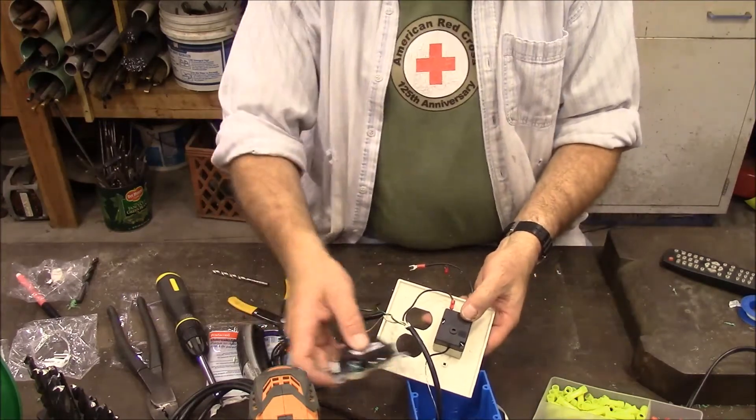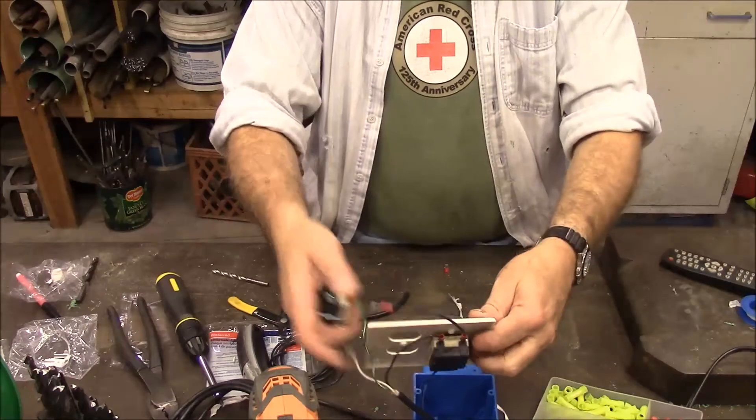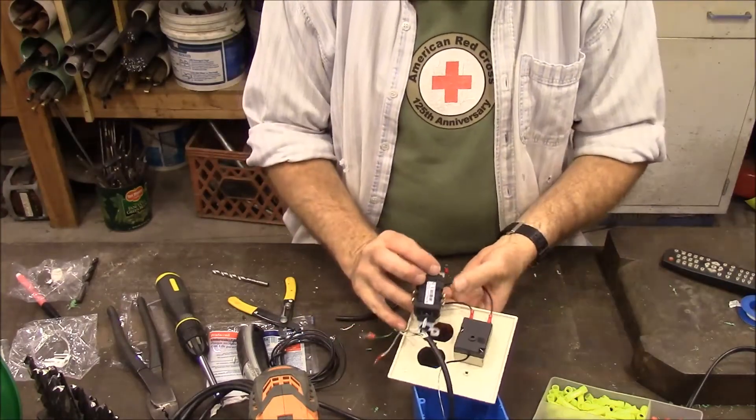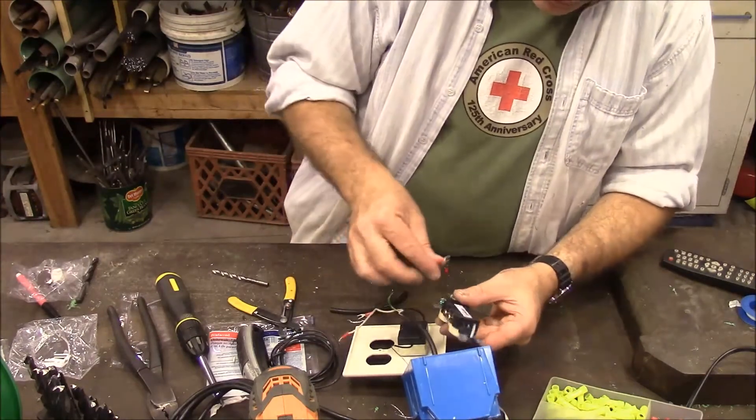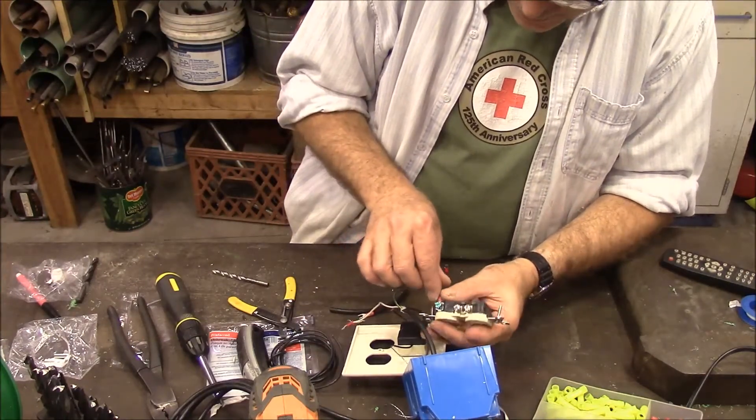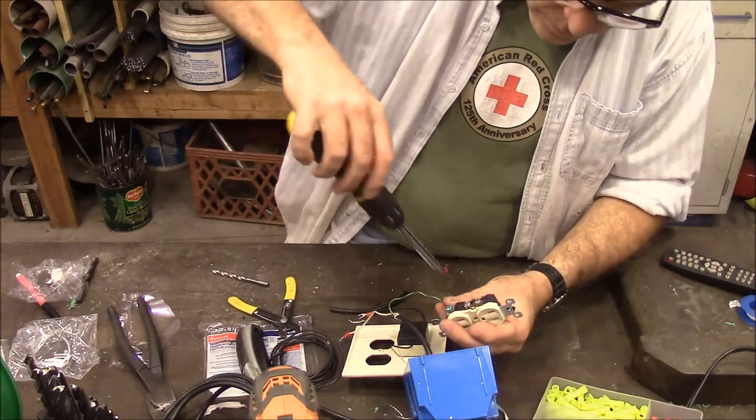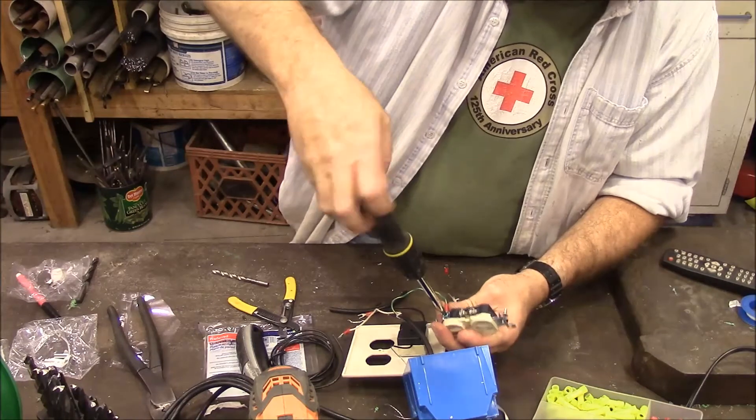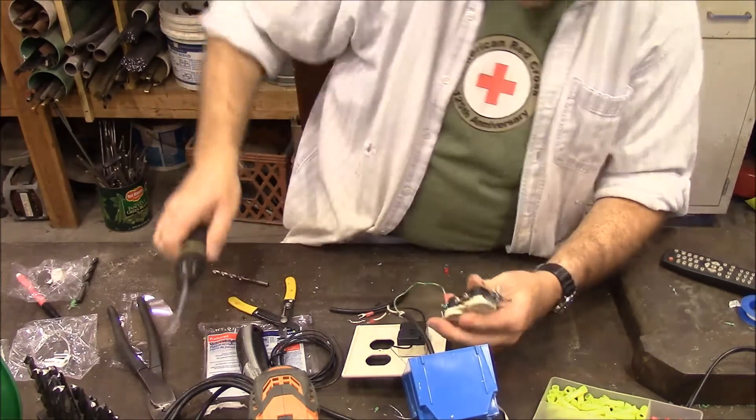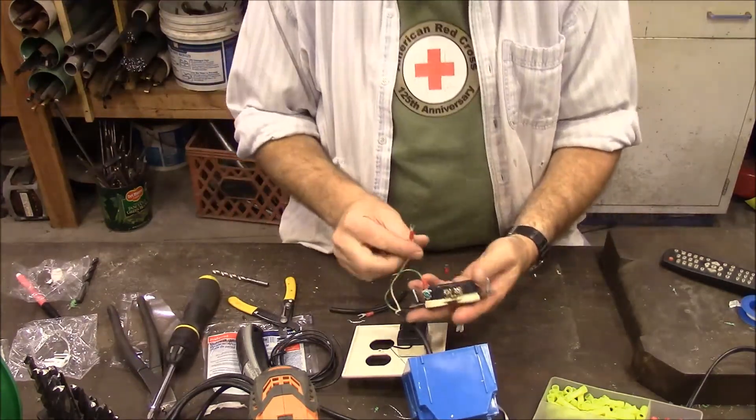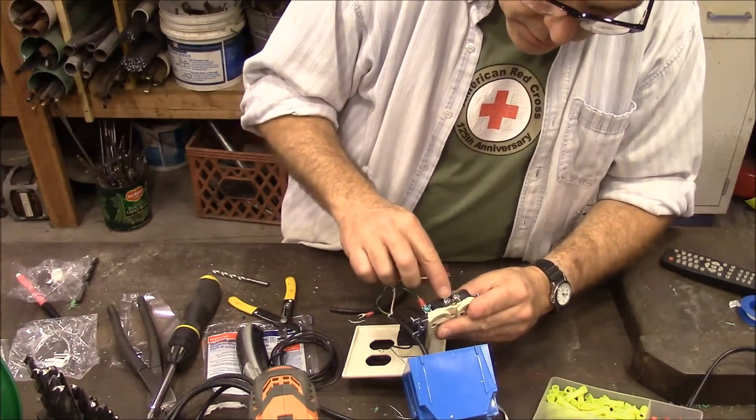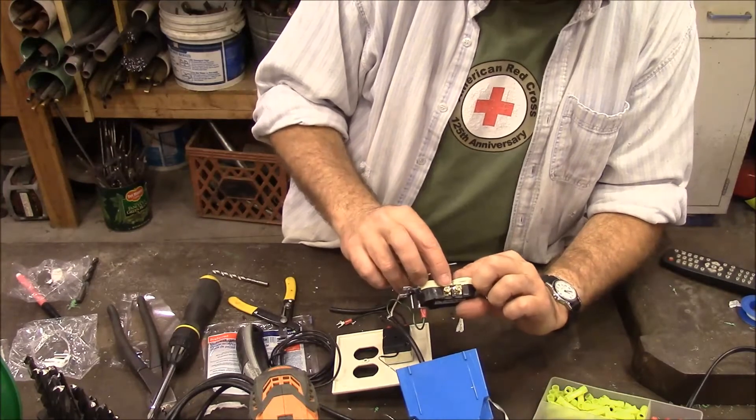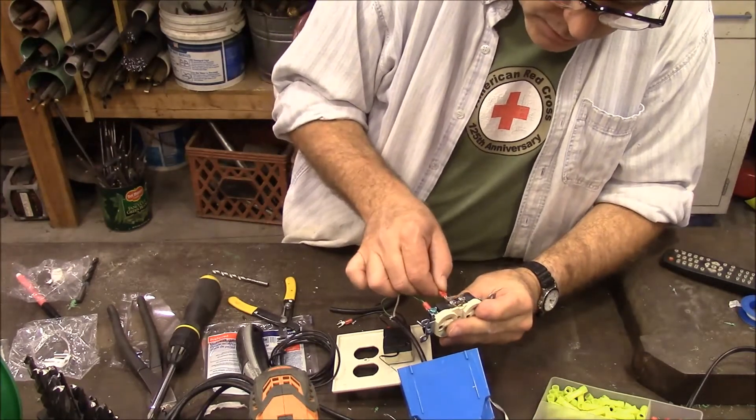Now our outlet is going to sit over here, like this, and so we want to put our ground wire on the ground terminal, that's the green one. And then we're going to put our white wire on the side with the silver screws. So this side's got silver screws, and this side has brass screws. So we're going to put it on the side with the silver screws.